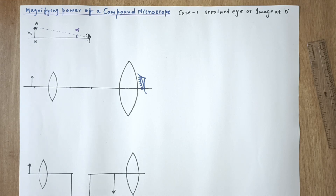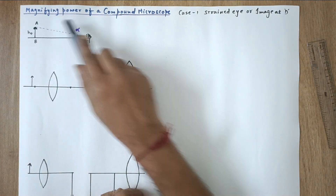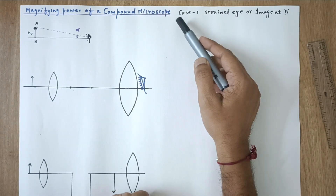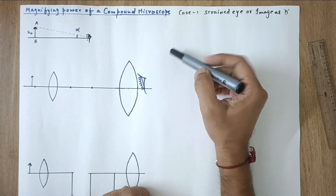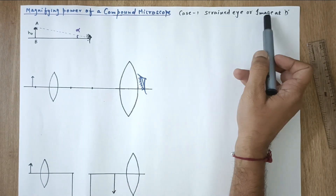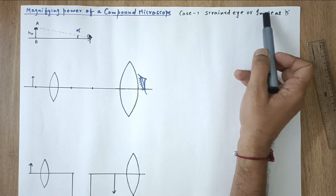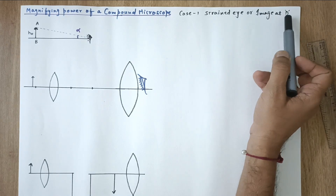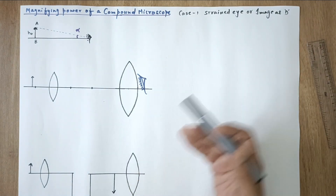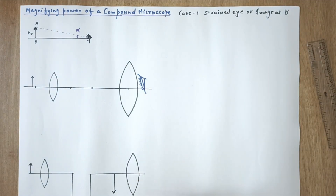In this video lecture we are going to define and derive the expression for the magnifying power of a compound microscope. There are two cases: case one is the strained eye, meaning when the final image is formed at LDDV, the least distance of distinct vision, and case two will be dealt with in the second part of this video.